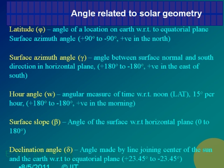The surface slope beta can vary from 0 to 180 degrees — 180 degrees means lying face down, 0 degrees means flat with the surface facing up, and 180 degrees means the surface is facing downward. The declination angle: very easy definition — the angle made by the line joining the centre of the sun and centre of the earth with respect to the equatorial plane.